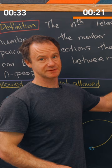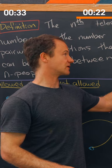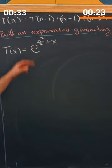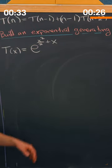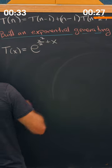Our exponential generating function was e to the x squared over two plus x. Now the first step I'm going to do...